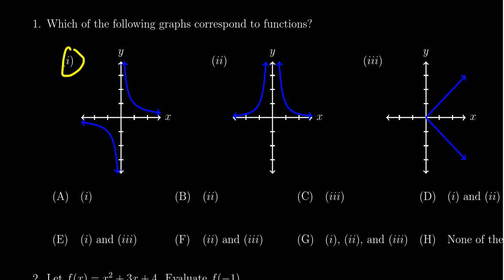When we look at graph two, all these vertical lines intersect the graph only at one point, so it passes the vertical line test. Two is a function.